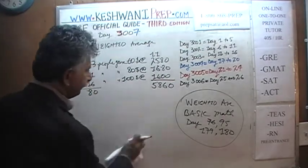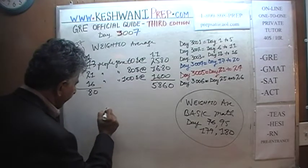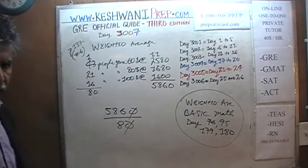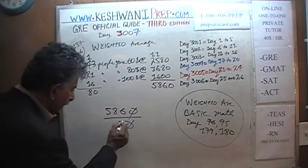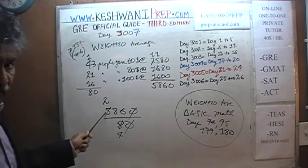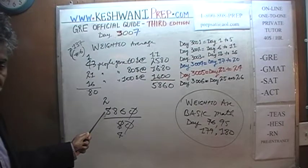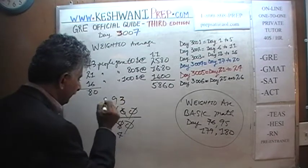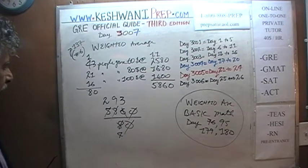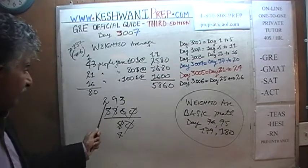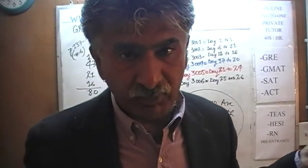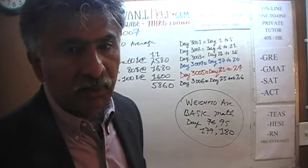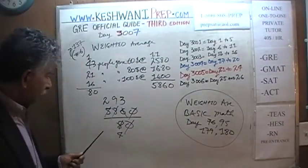Now let's find the average contribution. We just have to divide that amount by the number of people: 5,860 divided by 80. We see a zero on top and bottom — divide top and bottom by 10 to get 586 over 8. Then divide by 2 because they're both even: 8 becomes 4 and 586 becomes 293. We're going to divide 293 by 4. Let's just find out what that is. We're going to get a mixed number at the end.